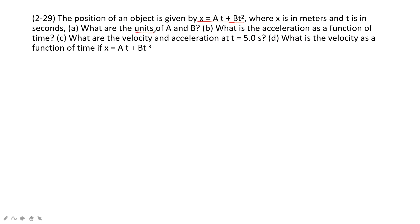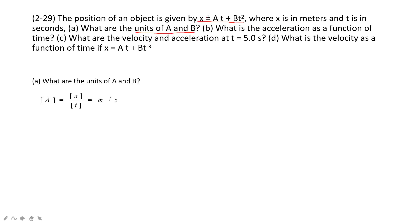The first part asks you for the units of a and b. For this, we know that in an equation, the units must be equal on the left side and right side. Therefore, the unit of x must equal the unit of the term a times t, so the unit of a is unit x divided by unit t — meters per second. Also, the unit of x must equal the term b times t squared, so the unit of b is unit x divided by t squared — meters per second squared.